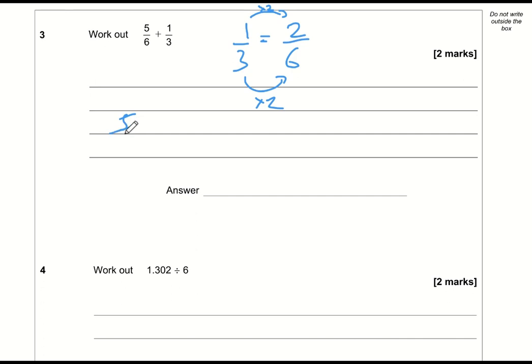So the question is now 5/6 plus 2/6, which is 7/6. I would usually convert an improper fraction into a mixed number: 7/6 is the same as 1 and 1/6. So the answer is 1 and 1/6.